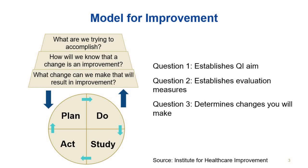You have identified your quality improvement aim, the associated evaluation measures, and your list of potential improvements. Now that you have chosen your first change to test, you will use the PDSA cycle to systematically test that change.